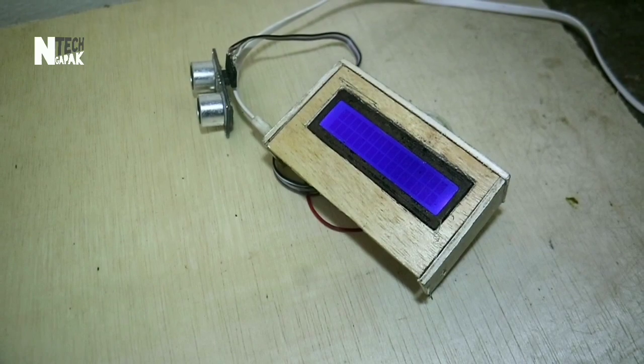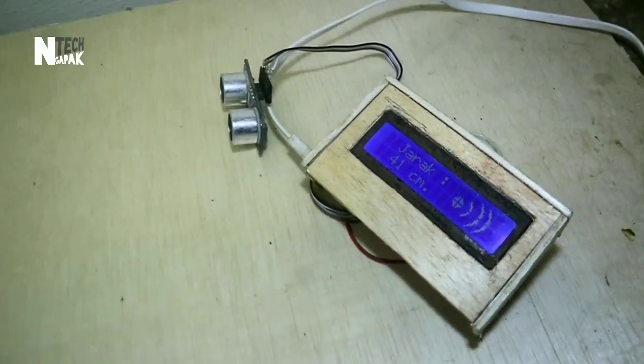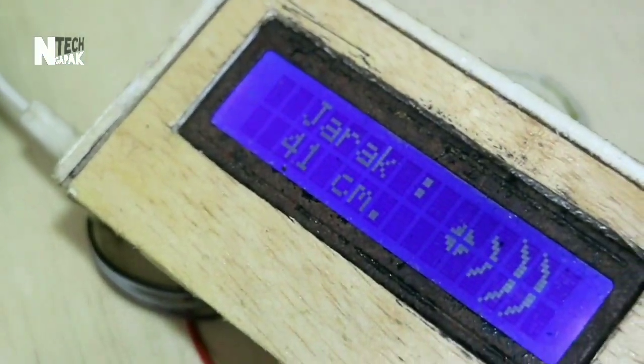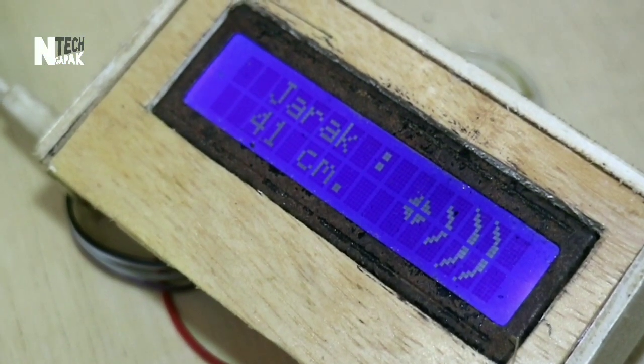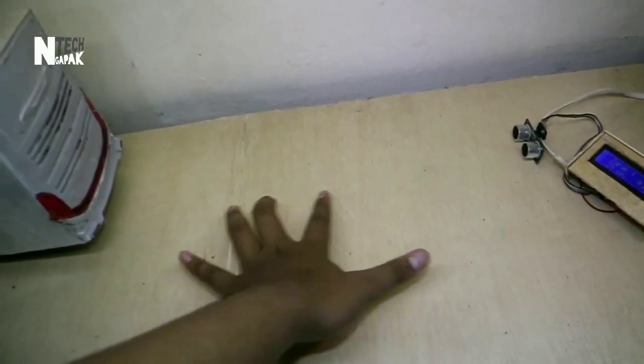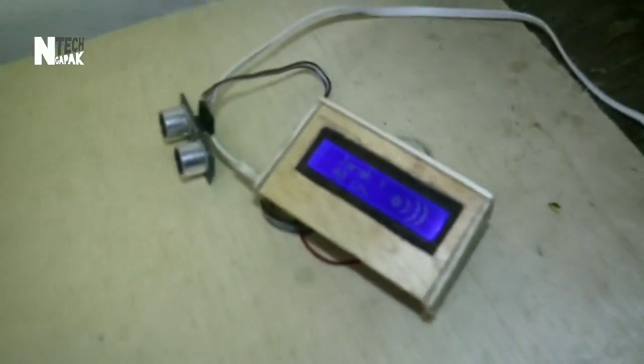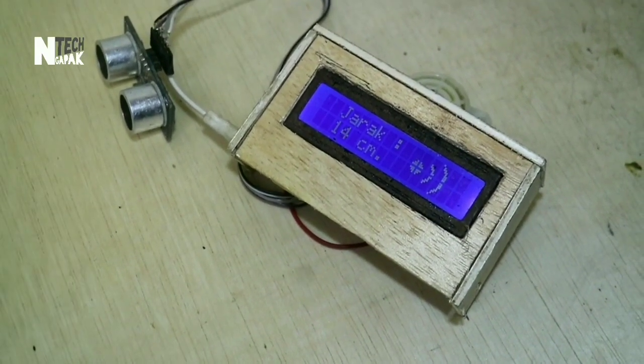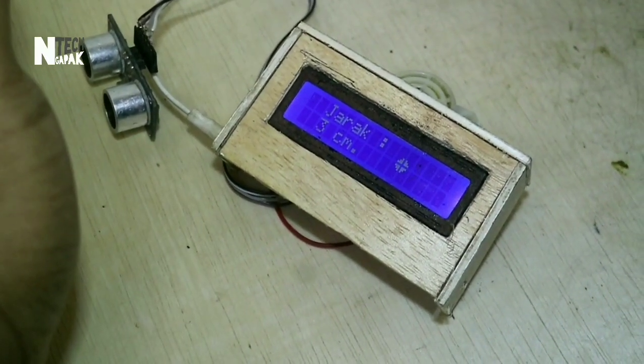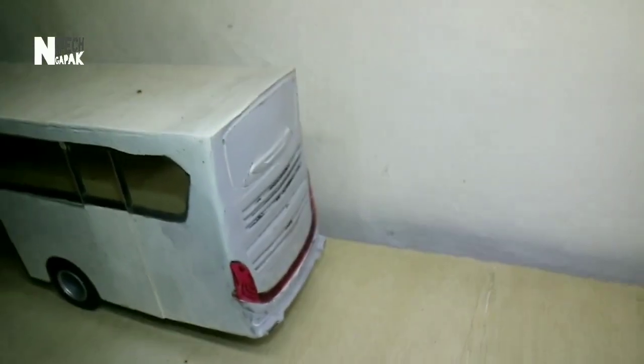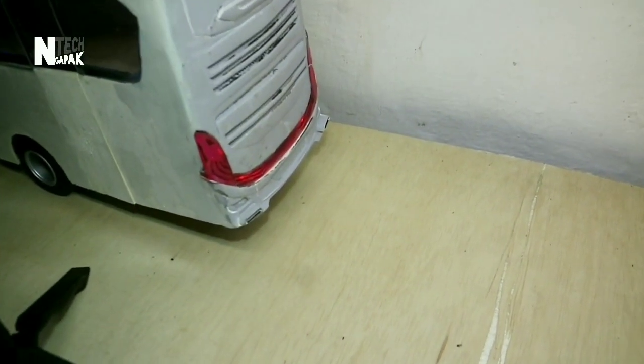Oke sudah nyala dan disitu terbaca 41 cm, kelihatan ya? Oke 41 cm dan kita akan langsung mundurin bisnya. Kita akan coba dulu pakai tangan apakah dia bekerja dan ya bekerja. Bisa kalian lihat disitu buzzer nya juga berbunyi. Oke ya sampai sini paham. Oke langsung aja kita nyalain bisnya. Oke sudah menyala.